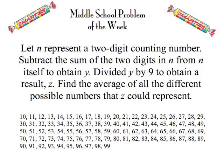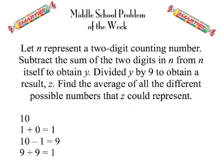Well, there are 90 two-digit numbers, and here they are. And perhaps you tried this exercise with all 90. But perhaps you didn't have to. Maybe you just started with the smallest two-digit number, 10. Added the digits and got 1. Subtracted from 10 and got 9.